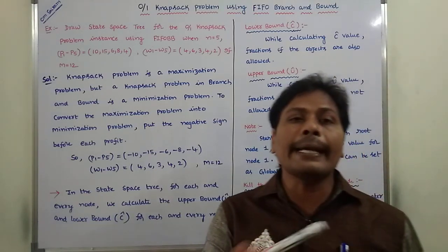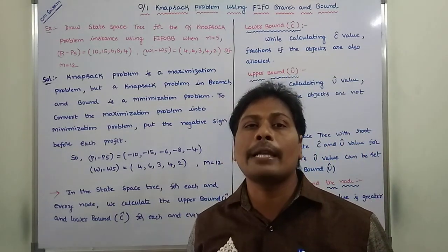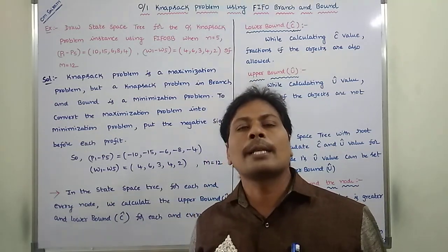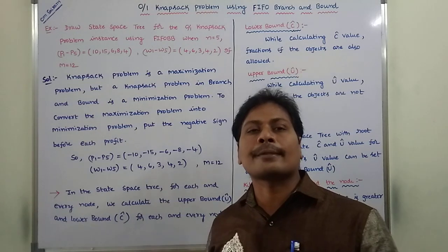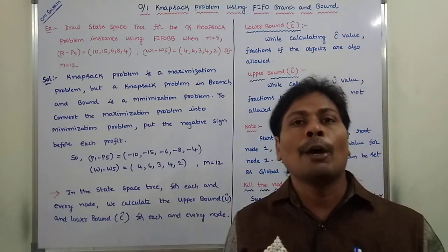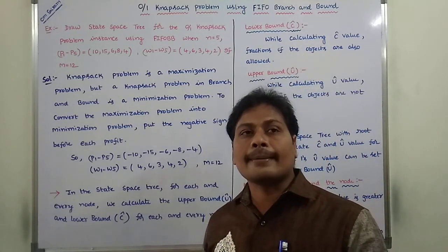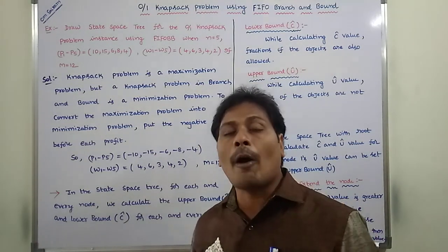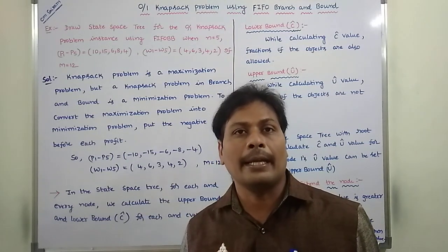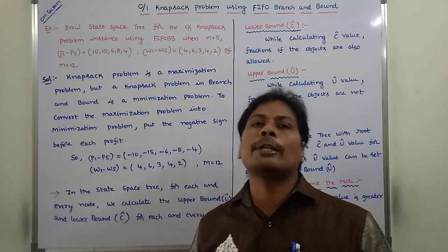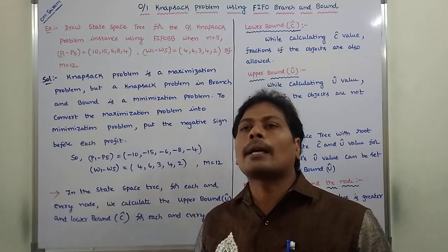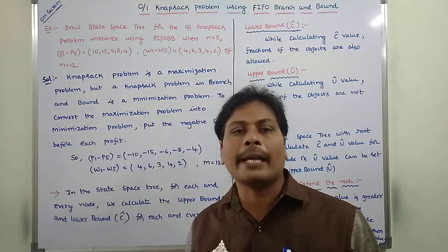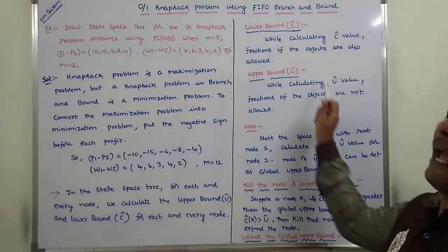For the upper bound U-cap value, we do not allow fractions. That is, one-third, one-half, or two-thirds of an object are not placed into the knapsack. Either a complete object is placed into the knapsack or a complete object is not placed into the knapsack while calculating the upper bound value.